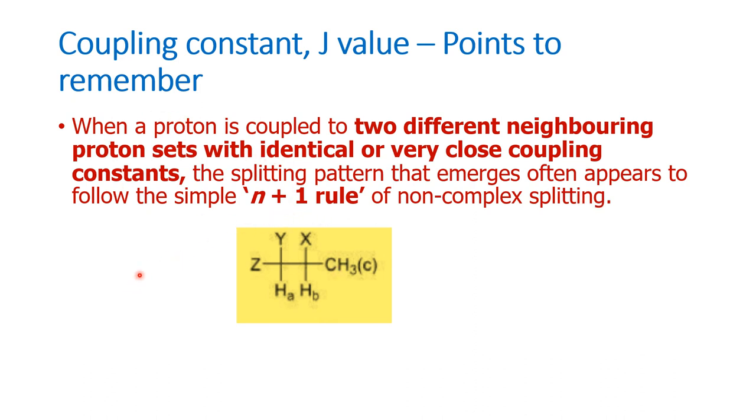In our second case, what is said is JAB is equal to JBC. In the sense, it is like as though A and C are similar. So in this case, we will follow the N plus 1 rule. Having this as the basis, let us go back to the question.